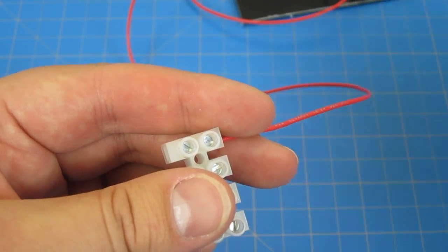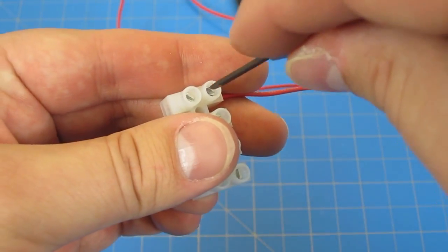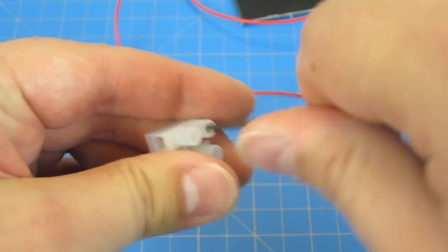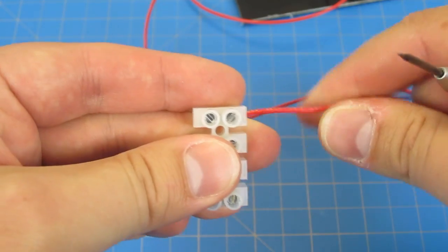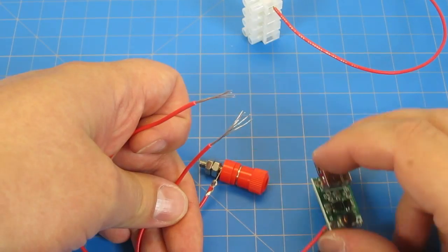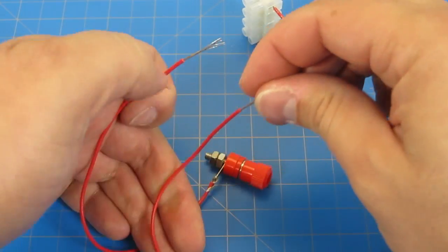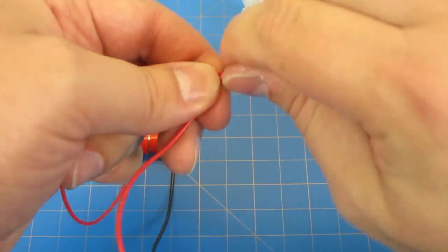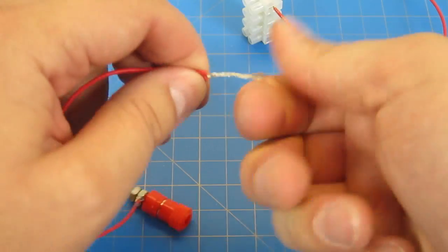We're going to start with the positive wire off the solar cell. Put it through the hole and screw it into place. Grab the positive red wire from the USB circuit and the positive red wire from your output terminal and twist them together nice and secure.